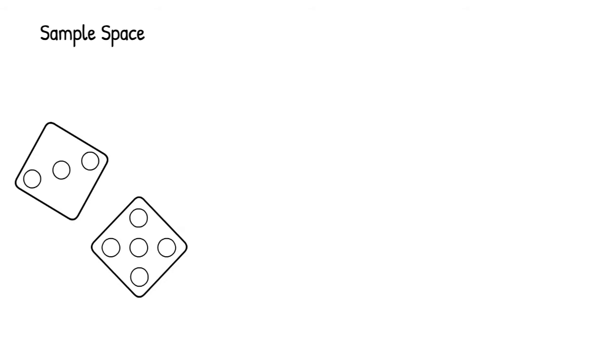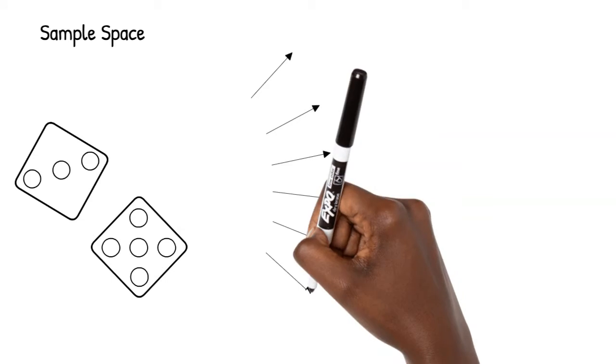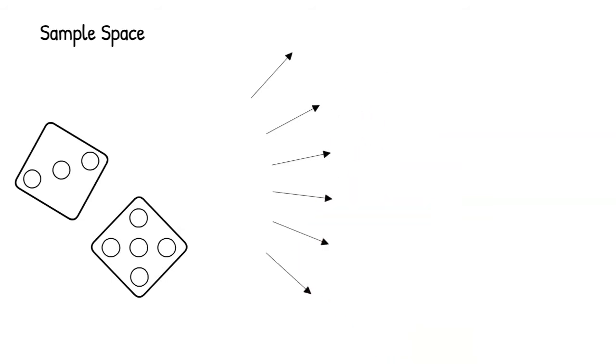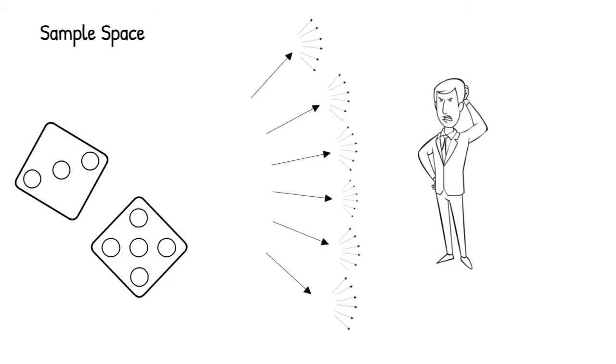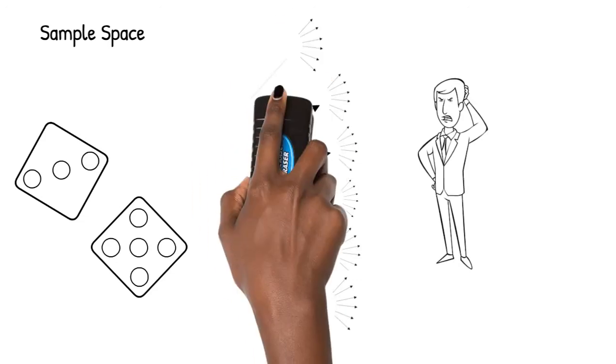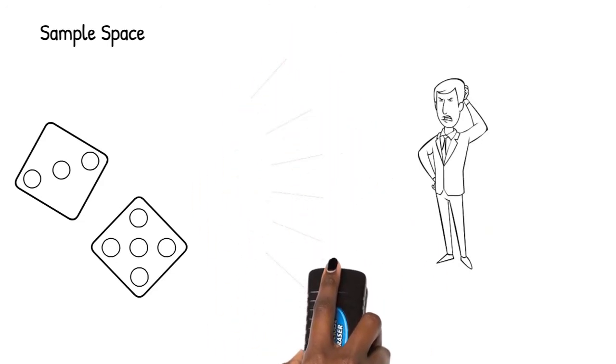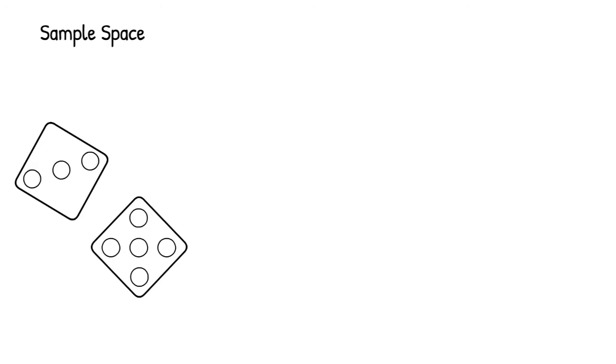A die has six faces. So looking at the possibilities of tossing one die using a tree looks a bit messy. Now throw another die in the mix and each branch would get six more branches. A tree that would confuse and overwhelm even the best of us.